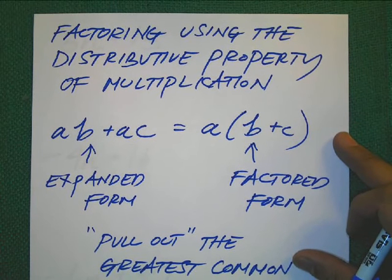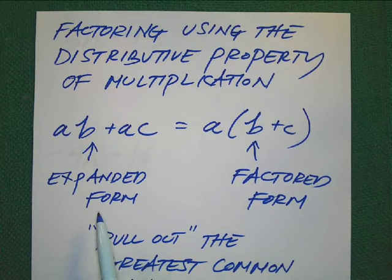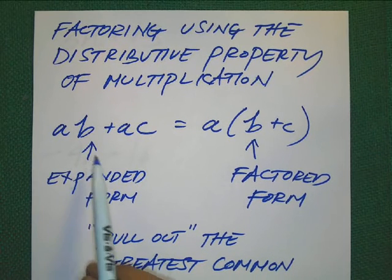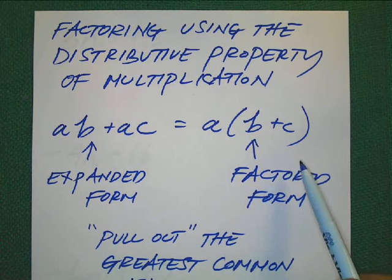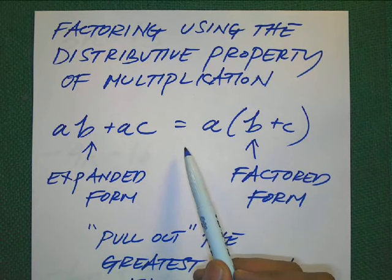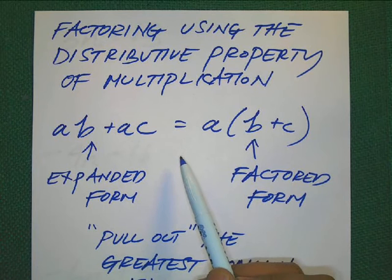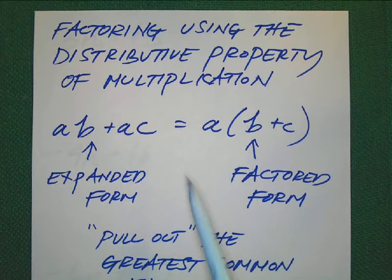So the whole idea behind factoring is to take an expanded form. This is an algebraic expression in expanded form. You are then going to use the distributive property and transform it into an equivalent form, which is factored form. The equal sign means that they are equivalent expressions. They are the same quantity, they just appear differently. Again, feel free to pause it in order to write this stuff down.